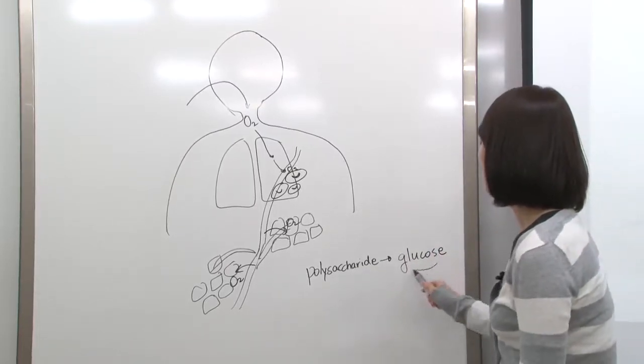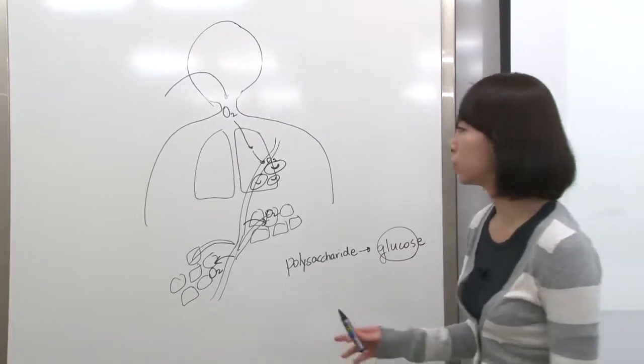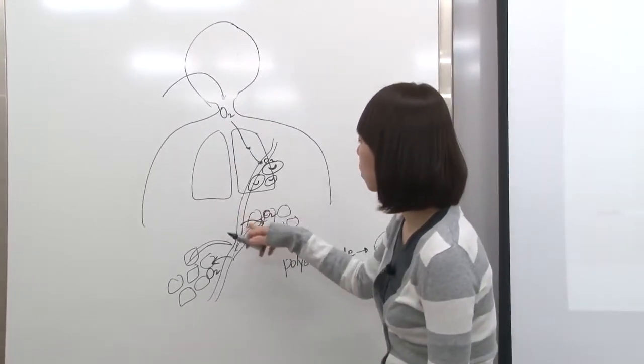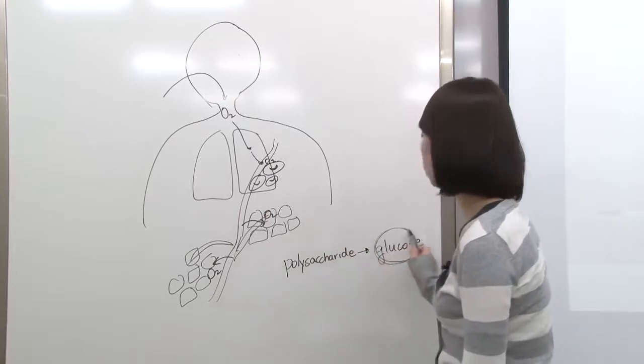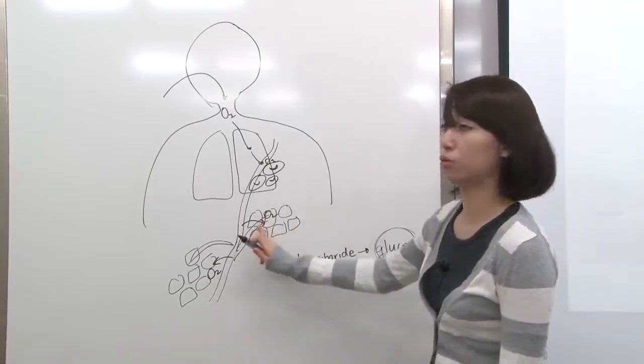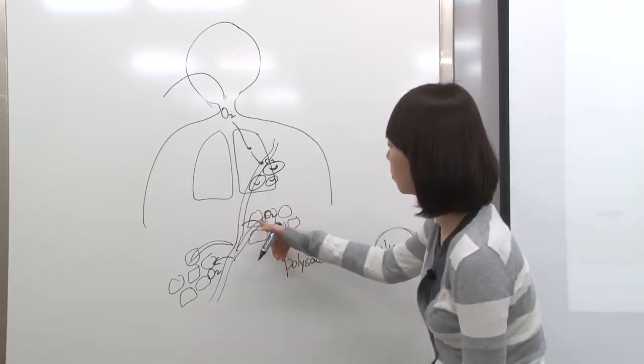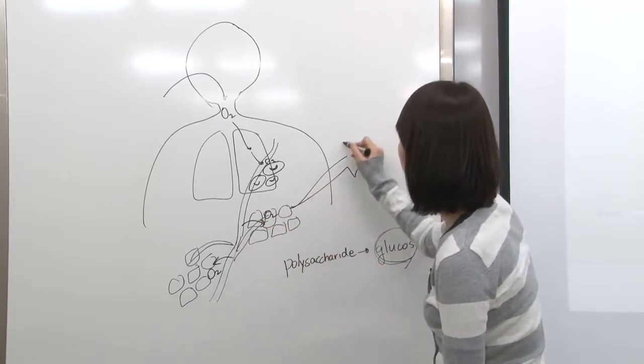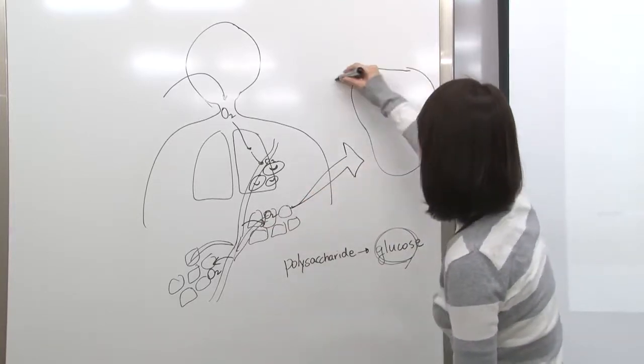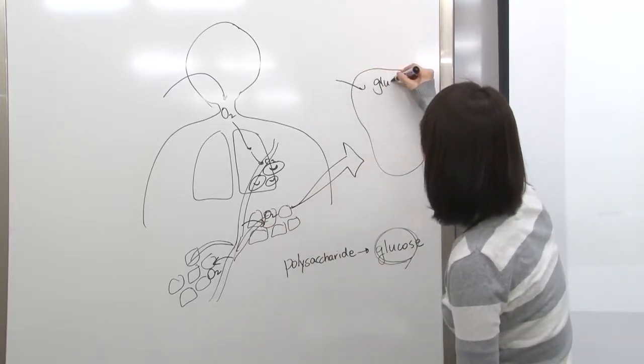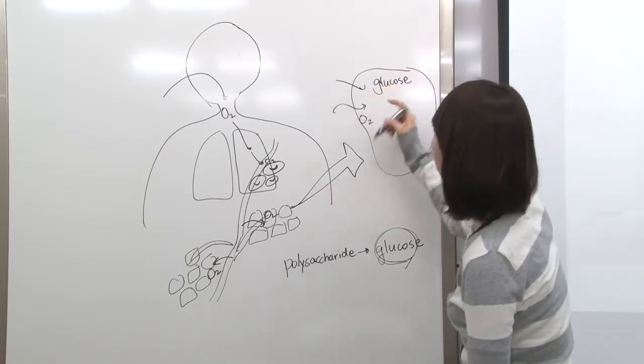We take in glucose into the cell. So the cell also takes in glucose and O2. When we magnify one cell here, the cell takes in glucose and O2.